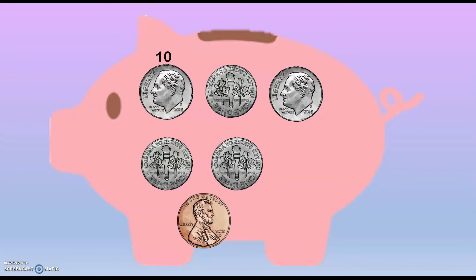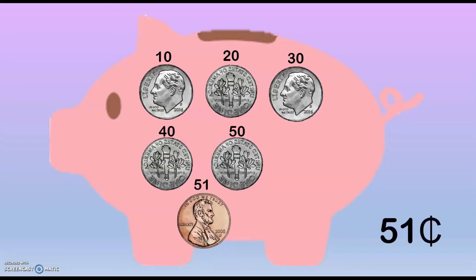10, 20, 30, 40, 50. That's all the dimes and we have one penny: 51. In this piggy bank we have 51 cents. Excellent job!